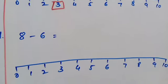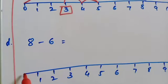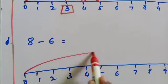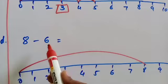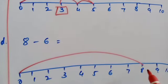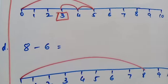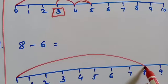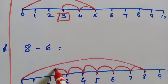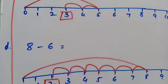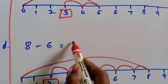The next one is 8 minus 6. The first number is 8, so from 0 we jump to 8. The second number is 6, so we come back 6 steps backward: 1, 2, 3, 4, 5, 6. The answer is 2. So 8 minus 6 is equal to 2.